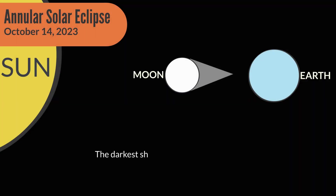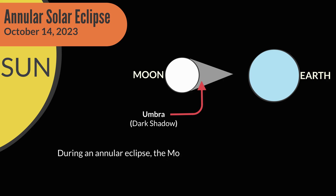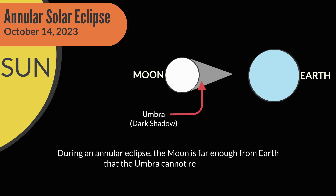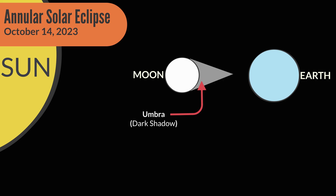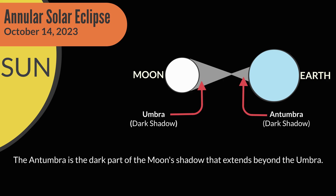The darkest shadow is called the Umbra. During an Annular Eclipse, the Moon is far enough from the Earth that the Umbra cannot reach the Earth.